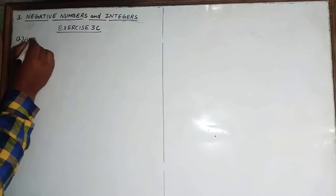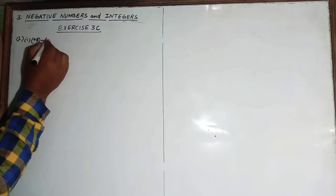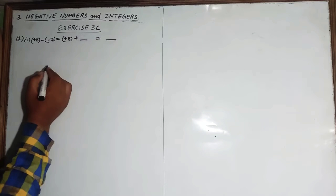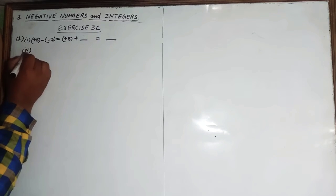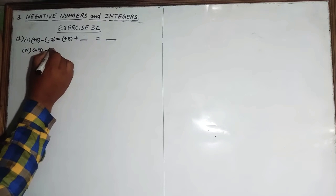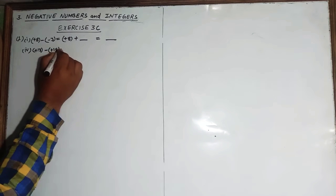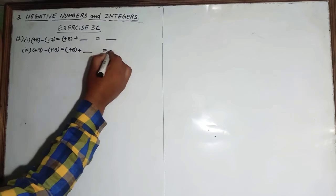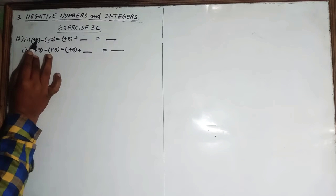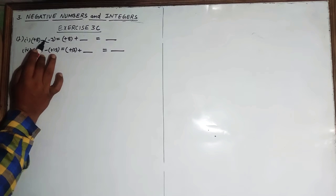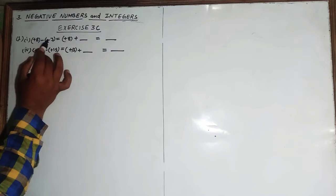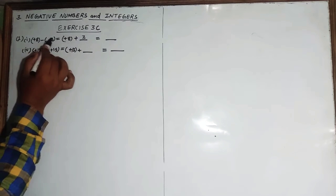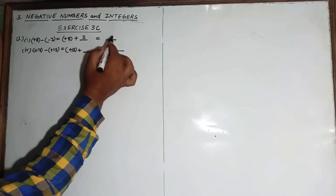Question number first, first part is: +8 inside bracket minus minus 3 equals +8 plus dash equals dash. You can see here minus into minus will become plus three. So eight plus three is eleven.